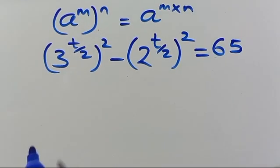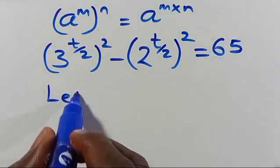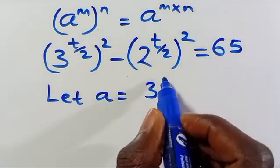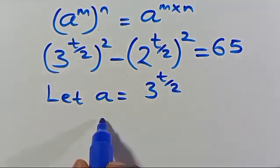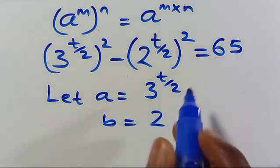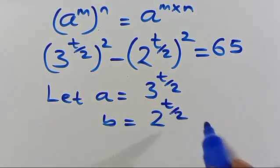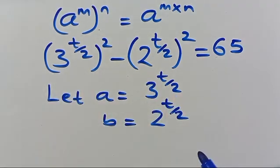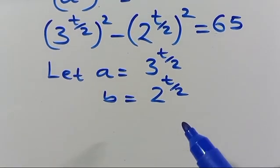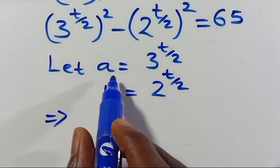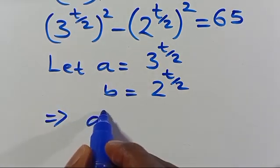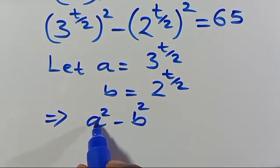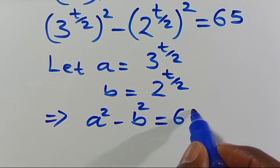So from here let a equal 3 to the power of t over 2, and let b equal 2 to the power of t over 2. Our concern here is to make this expression look like a difference of two squares. So since a equals this, we will have a squared, and since b equals this, we will have b squared. It becomes a squared minus b squared equals 65.